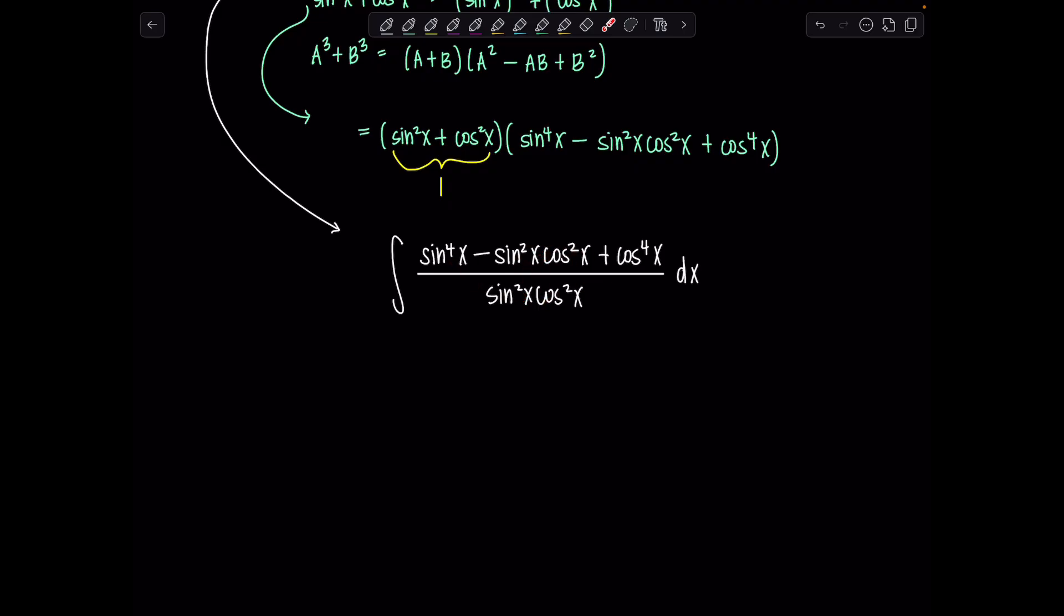What I'm going to do is split this into three terms. So now my integrand is sin⁴x over sin²x cos²x minus sin²x cos²x over the same thing, and then cos⁴x over sin²x cos²x dx.